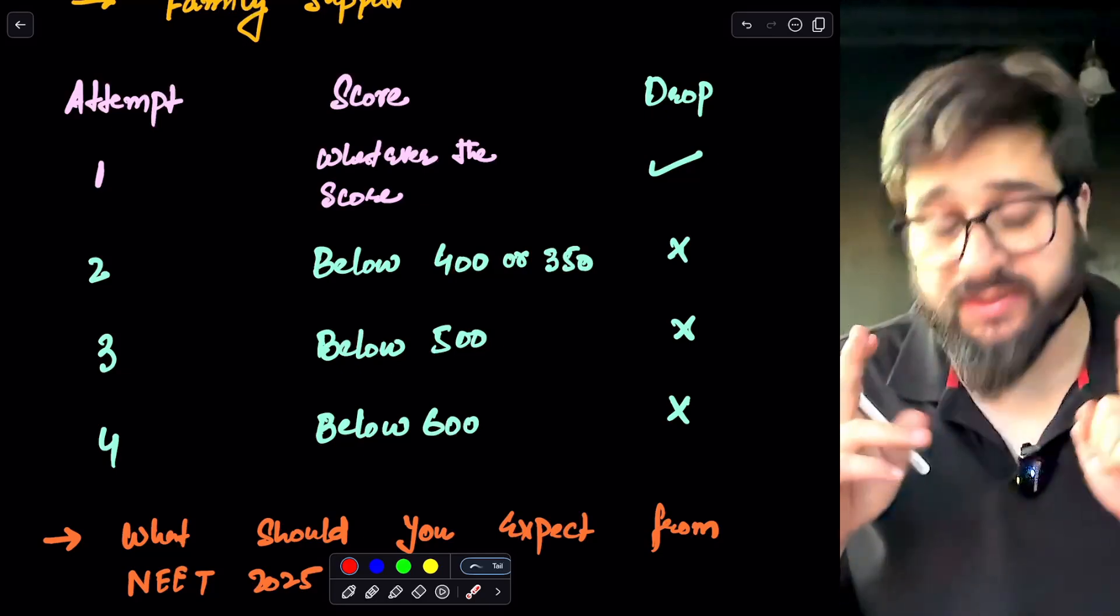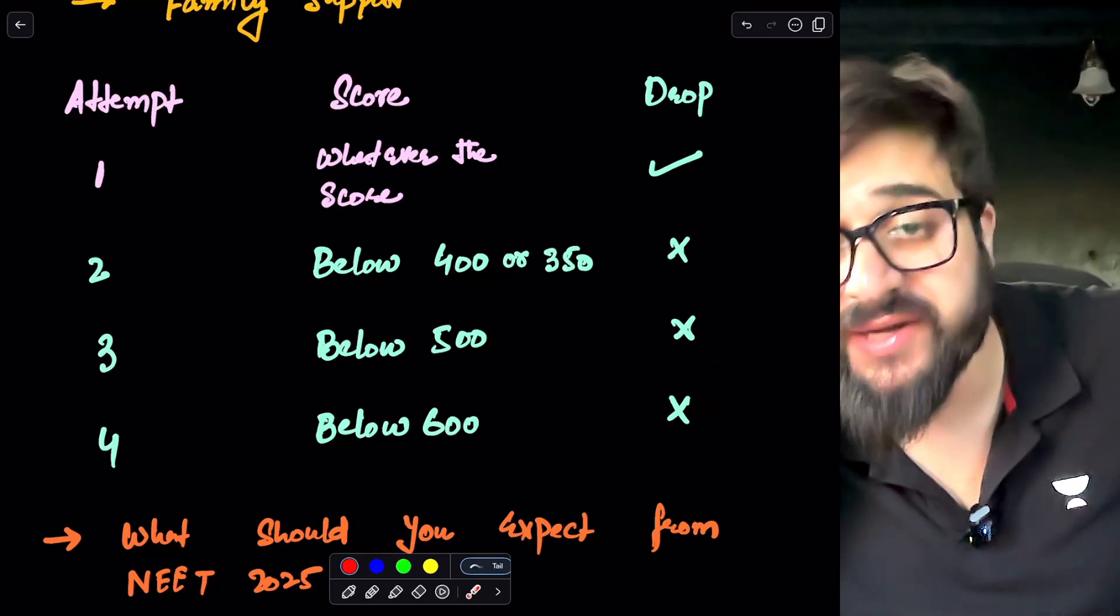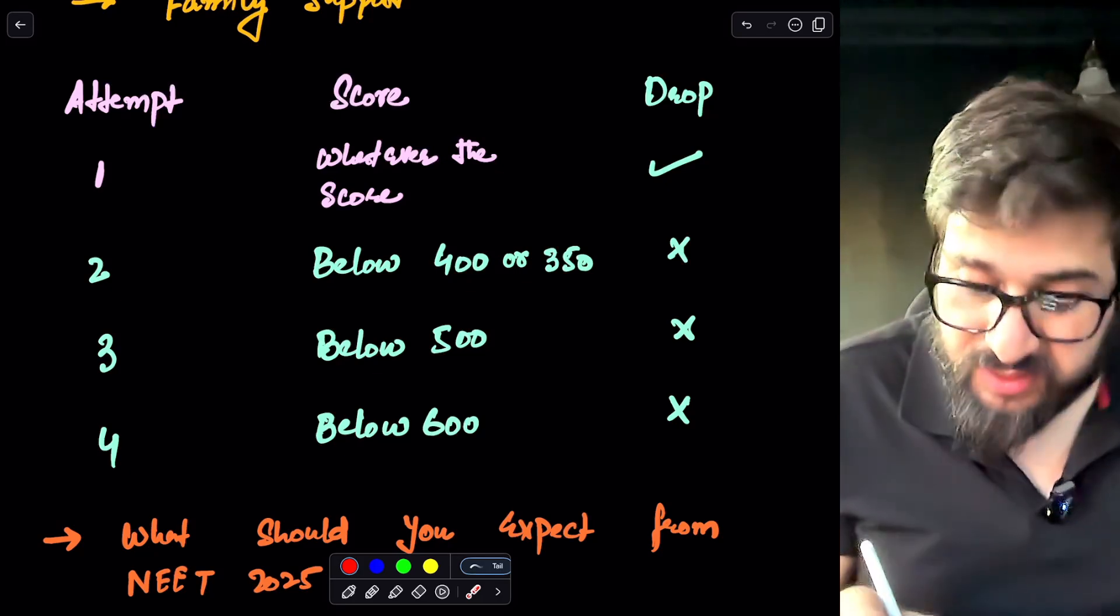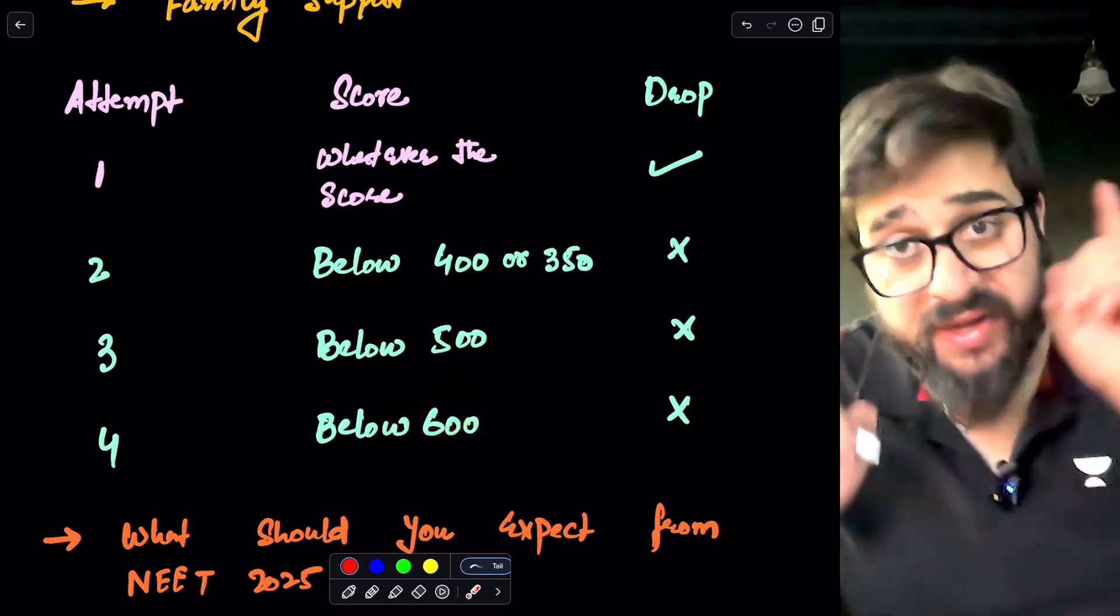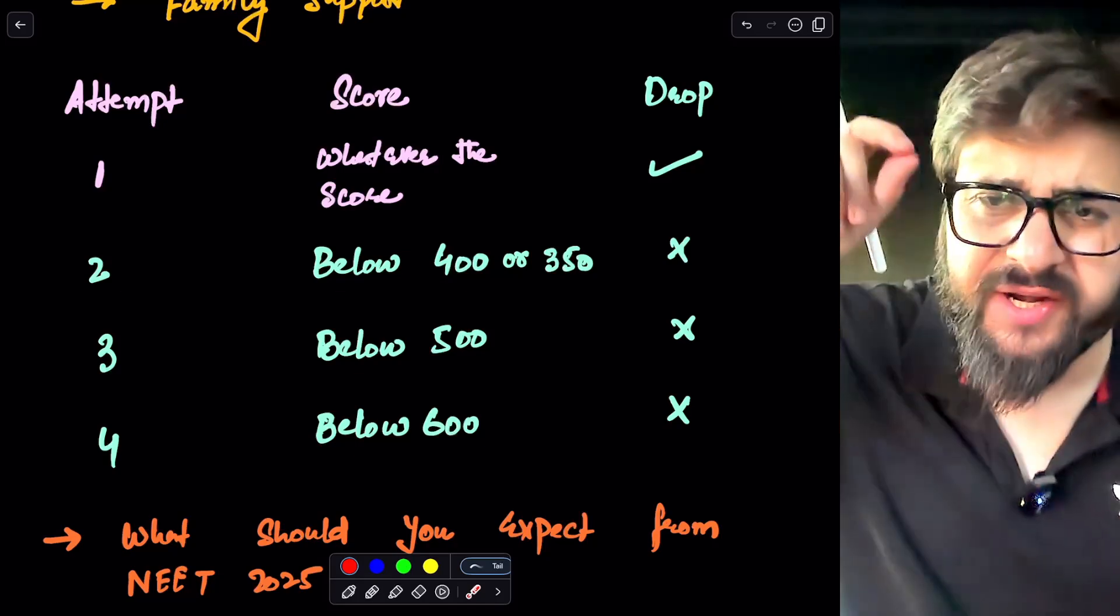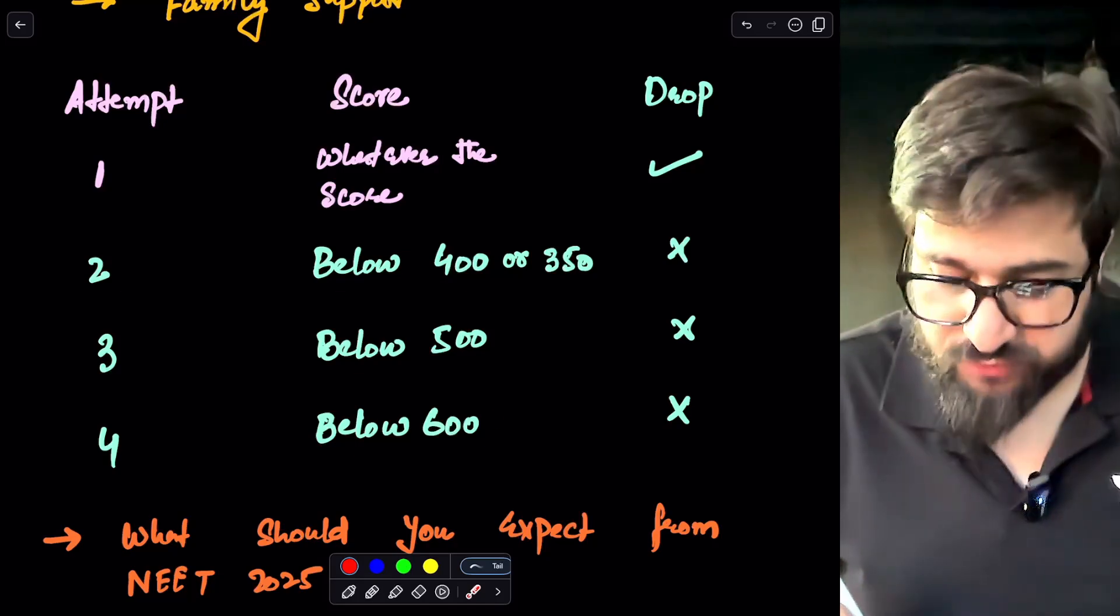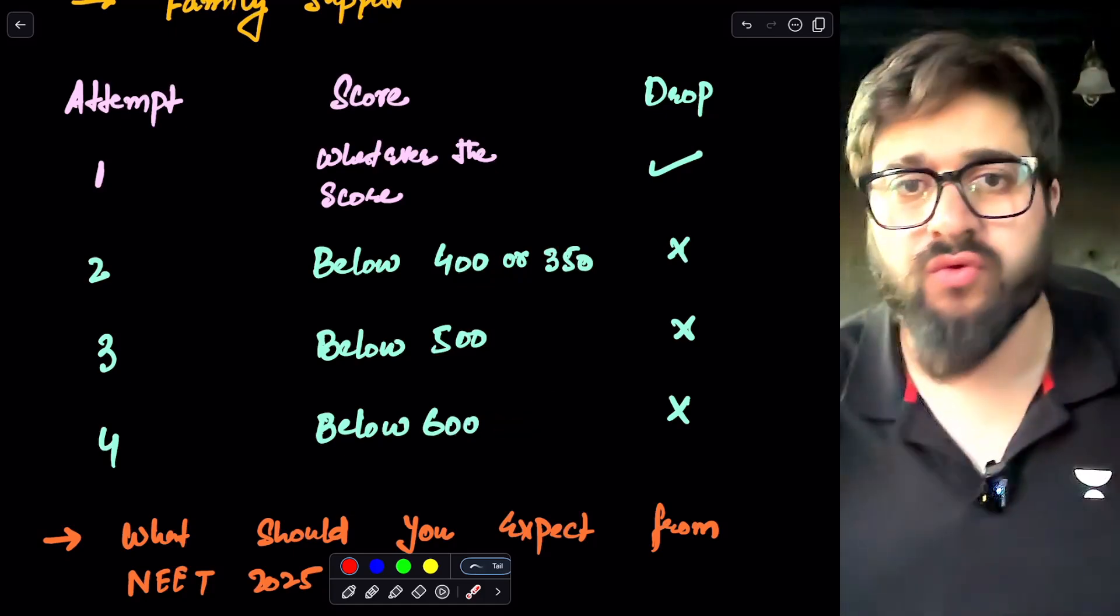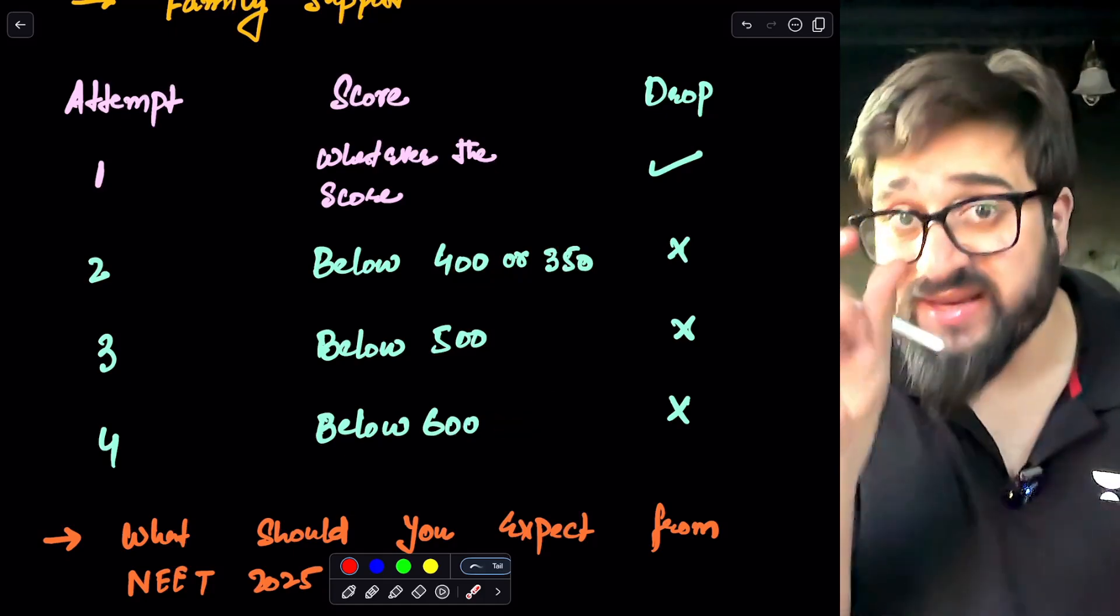But there are some things. If you think that you have the capability at this point of time, like I am getting 600 score, and if I'm getting 600 score 100% I'll crack the NEET this year. If I give you one more attempt, then in that case you can go for it. So this is basically the conditional.